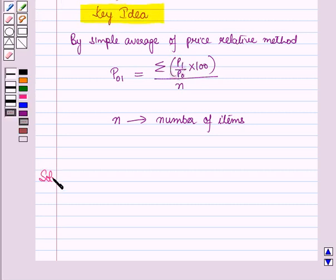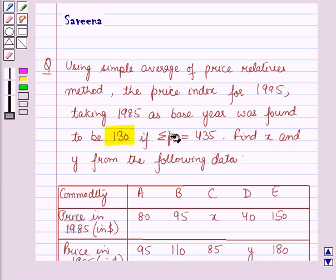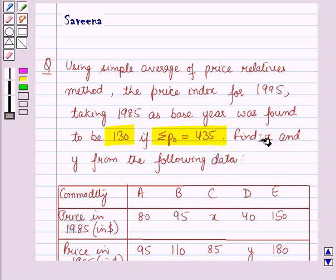Now we will start with the solution. Using the simple average of price relative method, the price index for the year 1995 taking 1985 as the base year is given as P01 equal to 130, and summation p0 is given as 435. This means the total of the base year prices of all commodities under consideration is 435, and we have to find x and y from the given data.